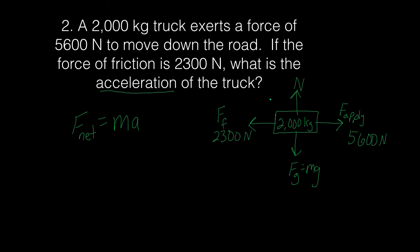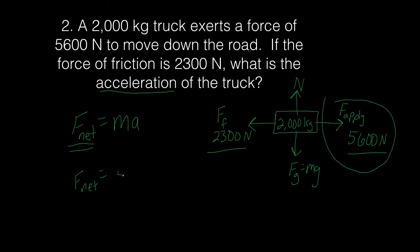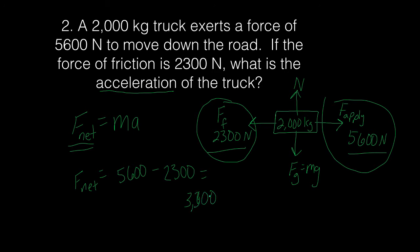Now the free body diagram is complete. The truck isn't accelerating up or down, so those forces are balanced. We focus on the horizontal forces. The net force equals the forces going right minus the forces going left: 5,600 minus 2,300 equals 3,300 newtons. So force net is equal to 3,300 newtons.